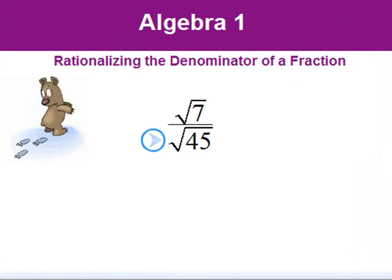Before we do this, let's make sure the denominator is in its simplest form. Using the reverse radical product rule, we can rewrite the denominator to show a perfect square.